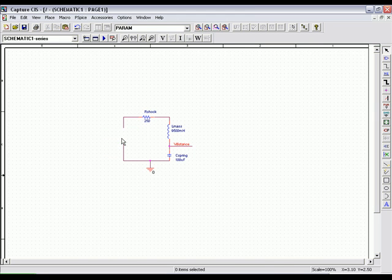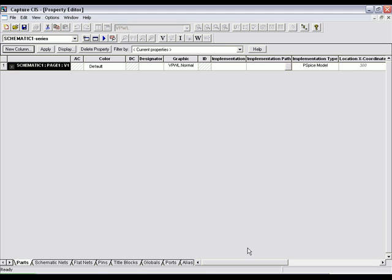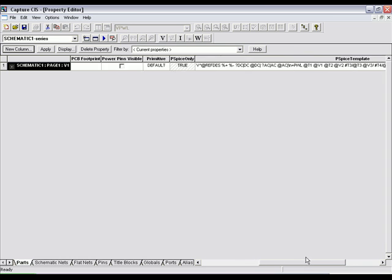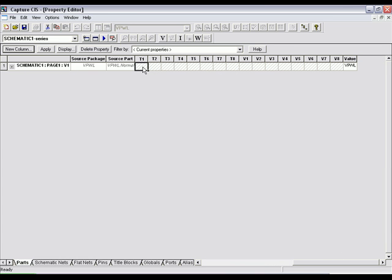The second part of this circuit, we're going to change out our pulse voltage source for the VPWL. This will allow us to show the pothole simulation. As if a wheel is going over a pothole, you'll be able to see through our waveforms exactly how that works. Changing our values for T1 through T6 and V1 through V6 to simulate this.